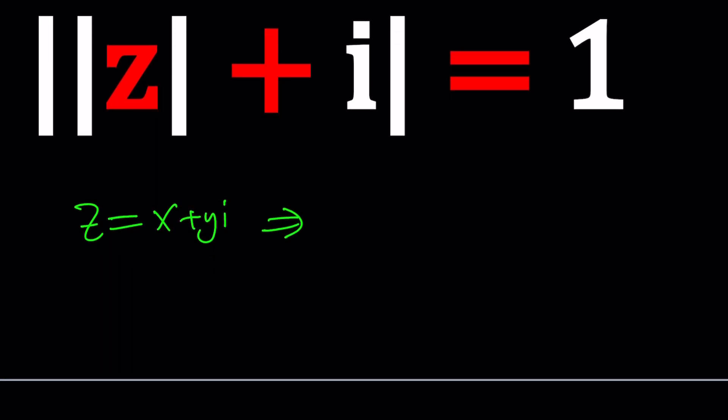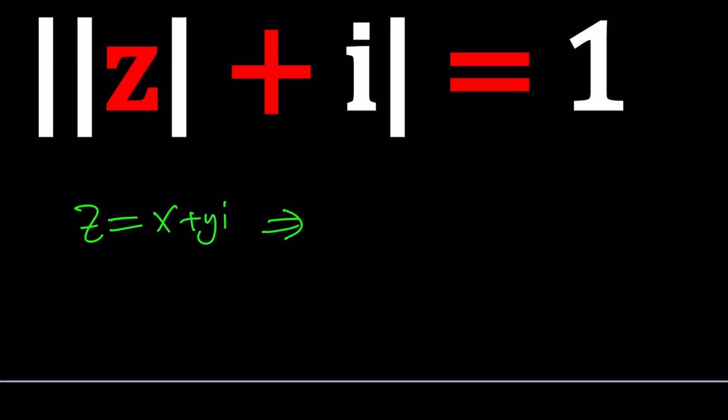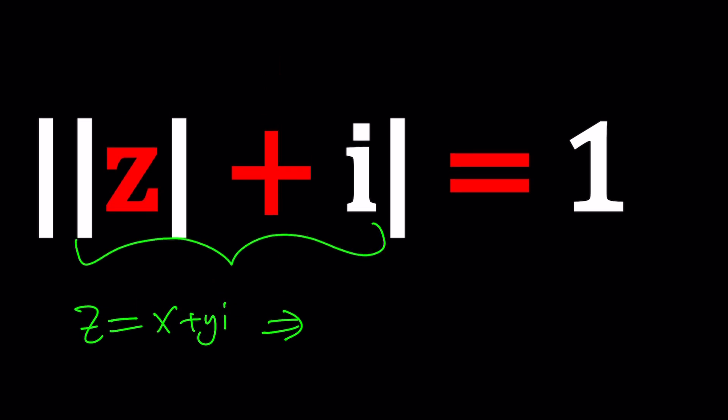Notice we have to take the absolute value of Z plus I. The absolute value of Z is just going to be square root of X squared plus Y squared. Right? Good.